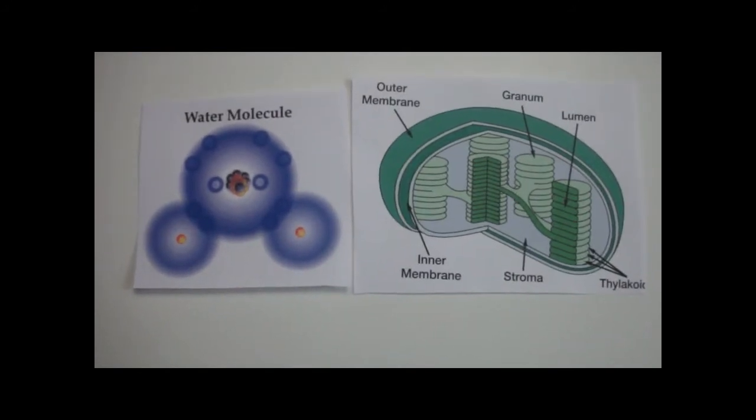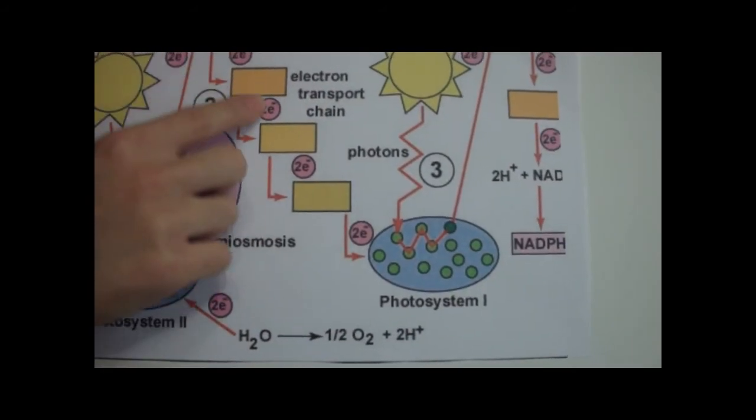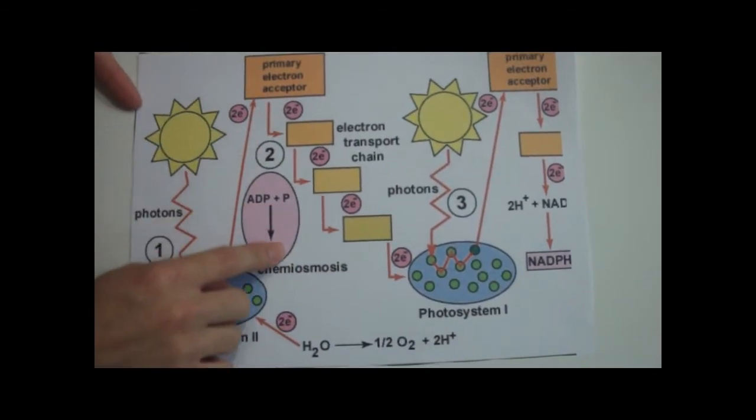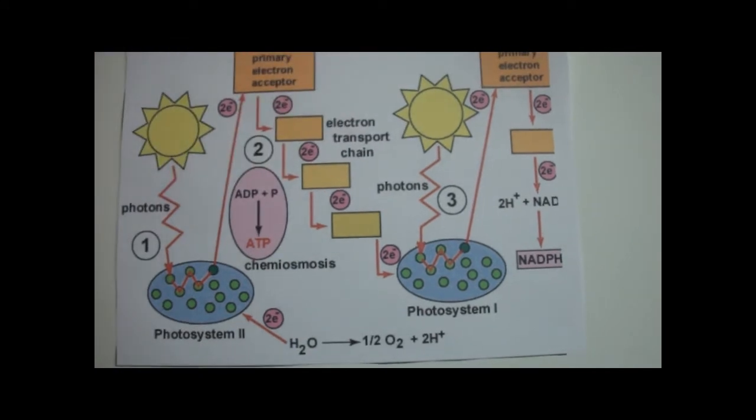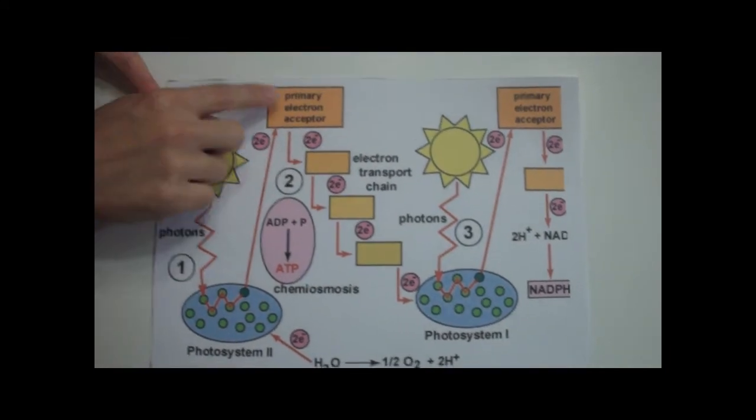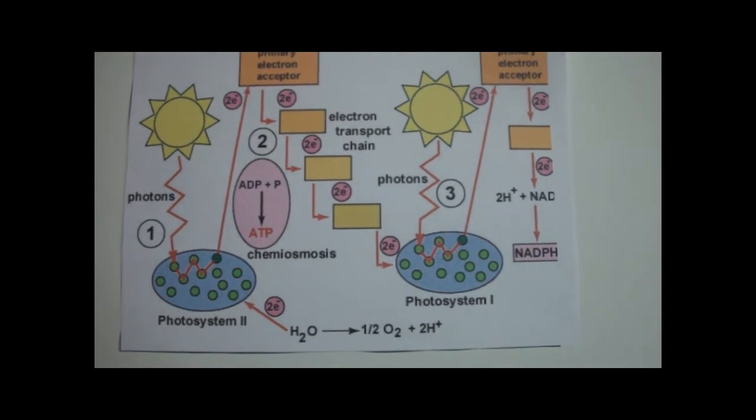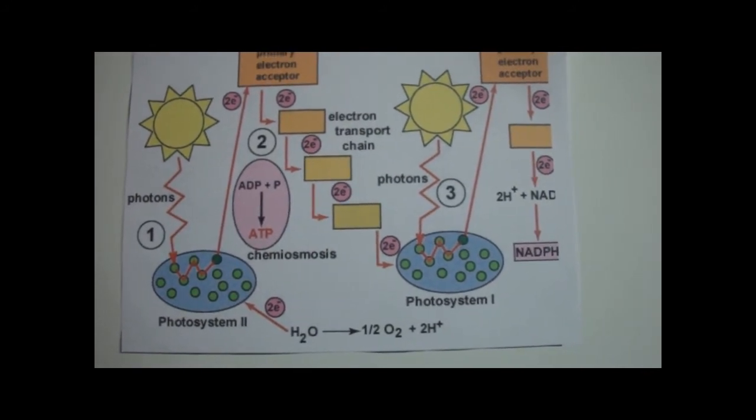The electrons go through photosystem 2 and then through an electron transport chain. As the electrons fall to a lower energy level, hydrogen ions are pumped into the thylakoid space, creating a hydrogen gradient. This provides the energy for ATP synthase to phosphorylate ADP into ATP in the process known as phosphorylation.